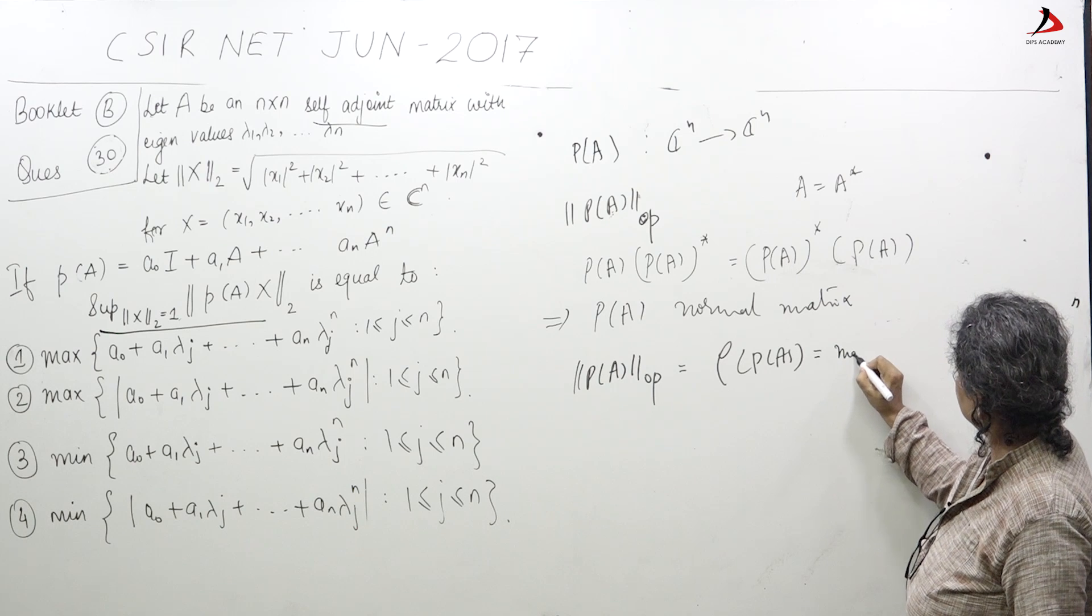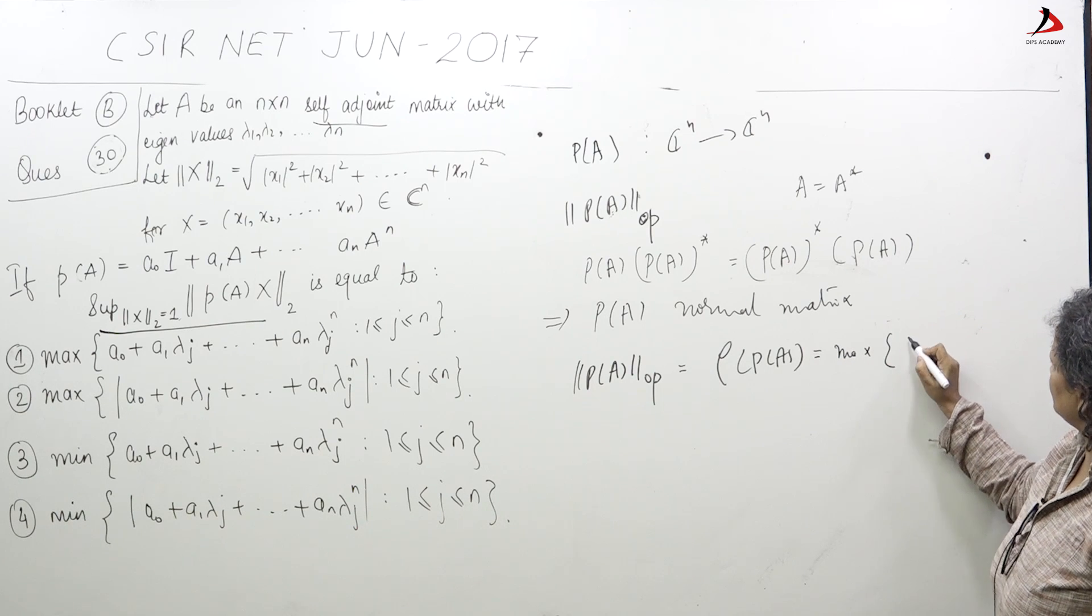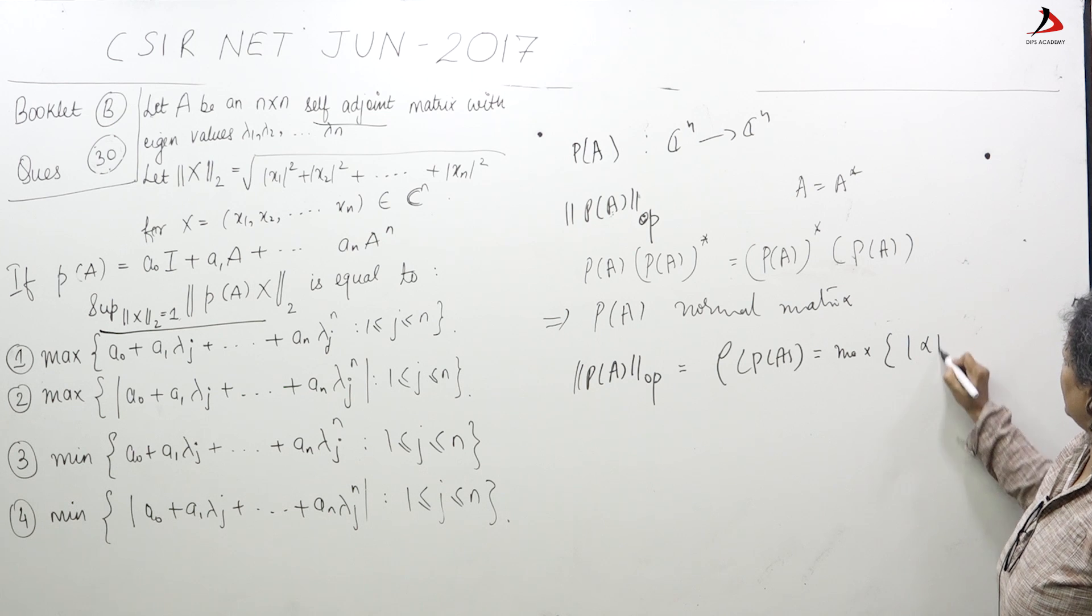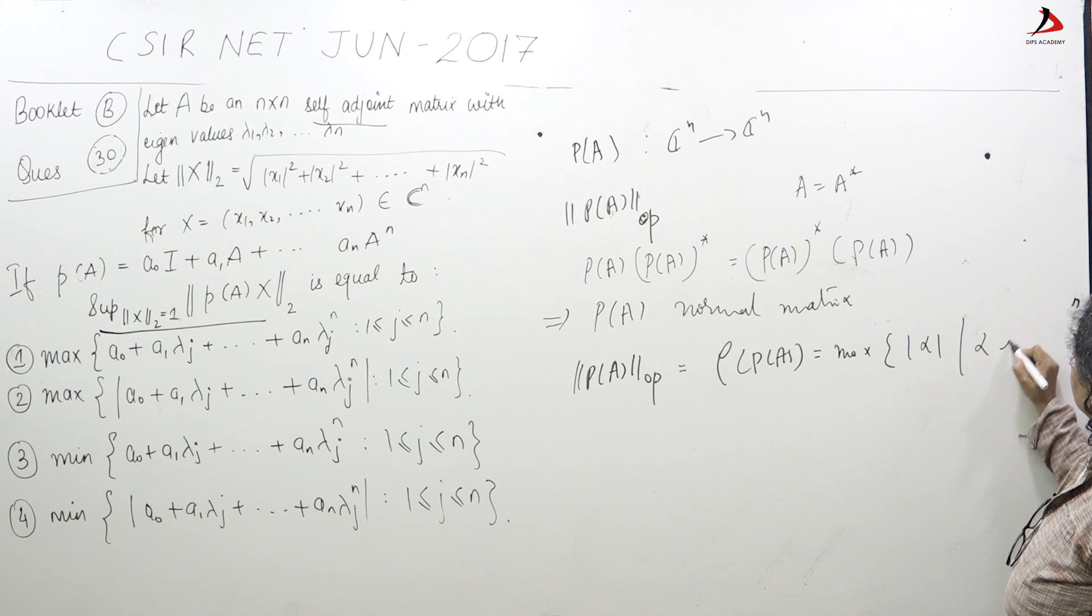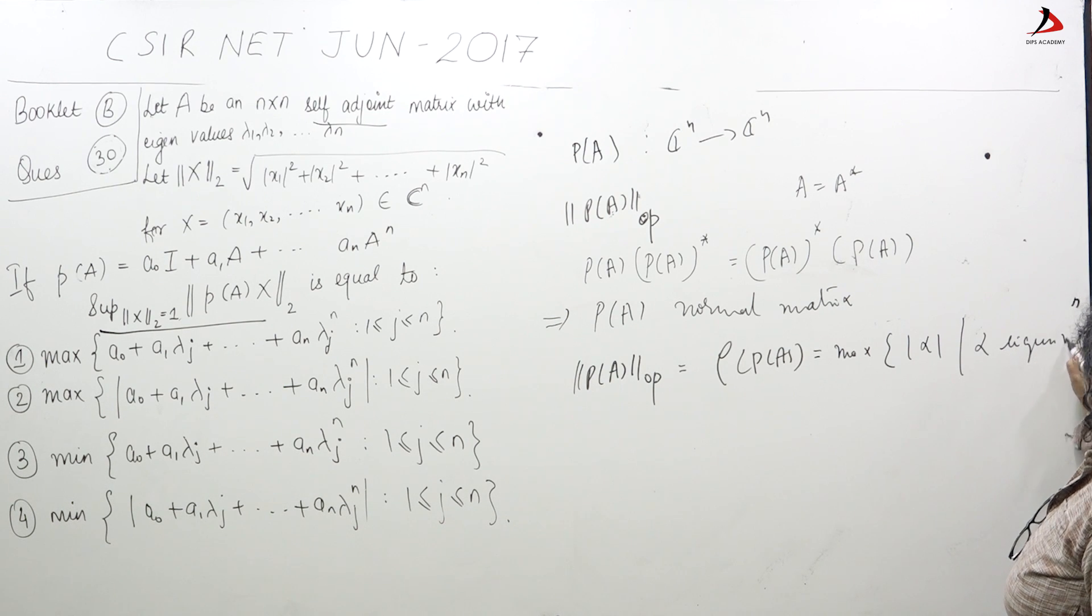It is the maximum of the eigenvalues mod of alpha, where alpha is an eigenvalue of P of A.